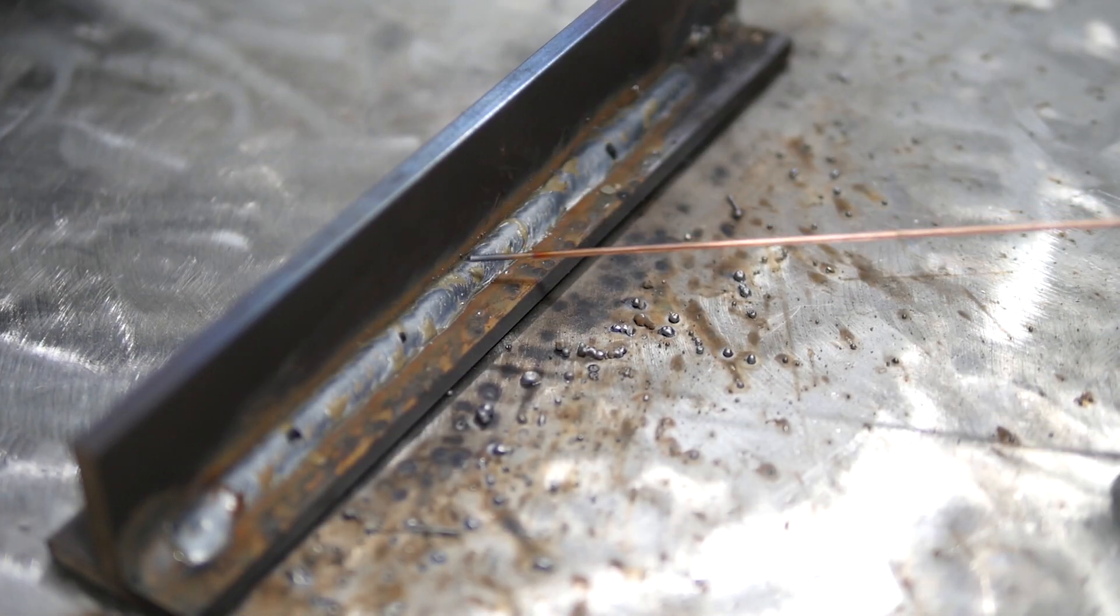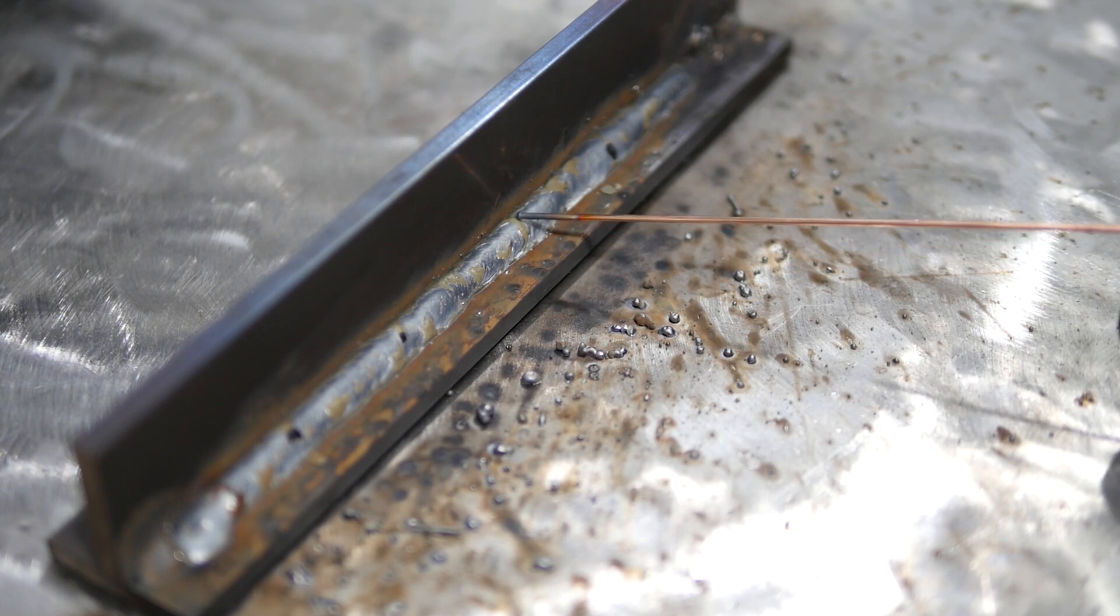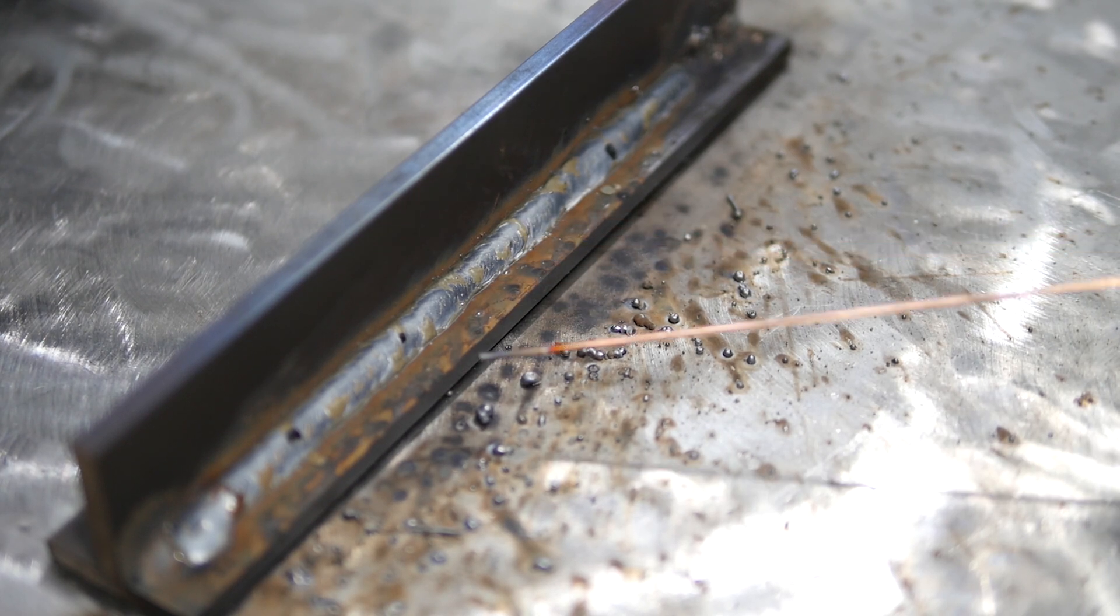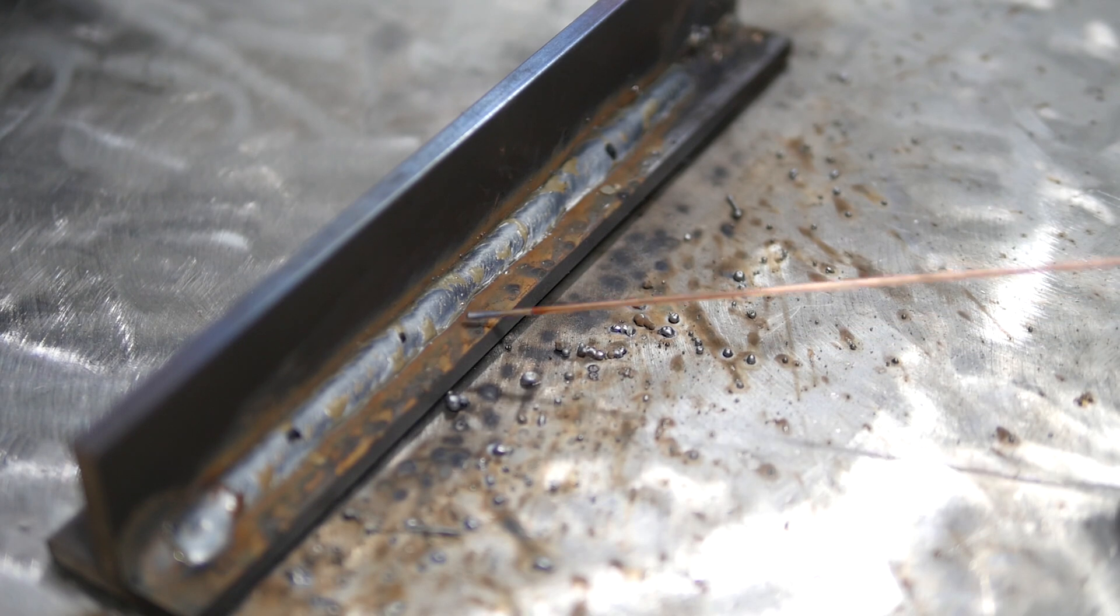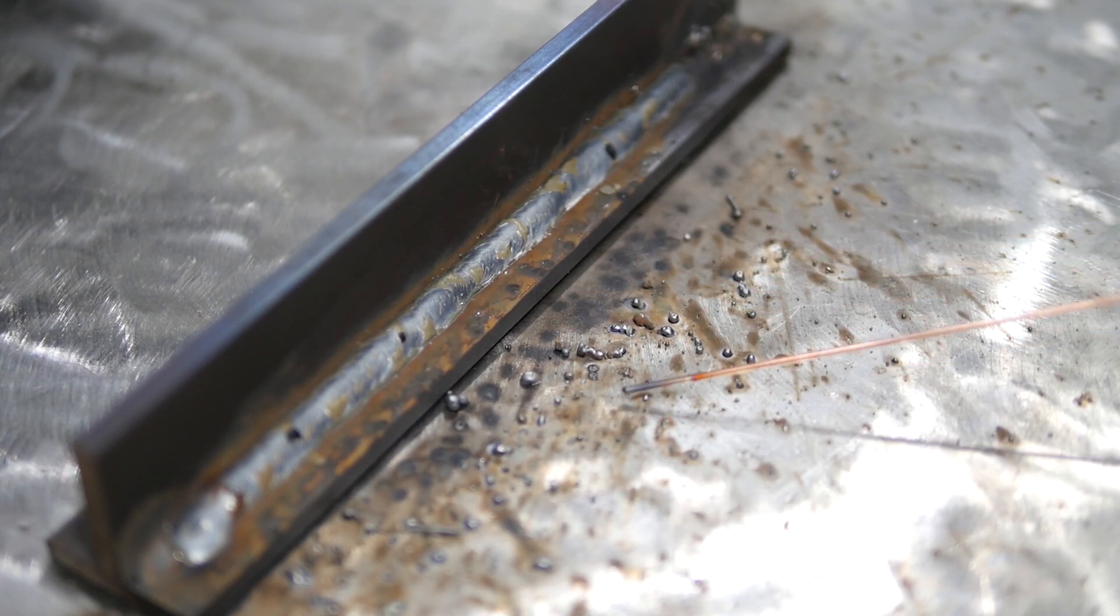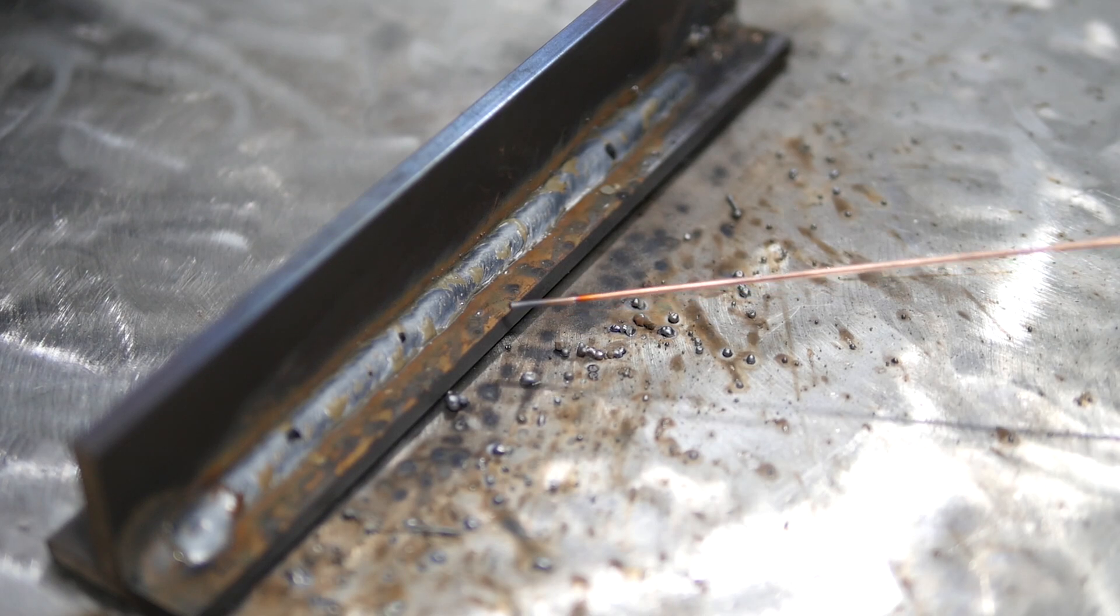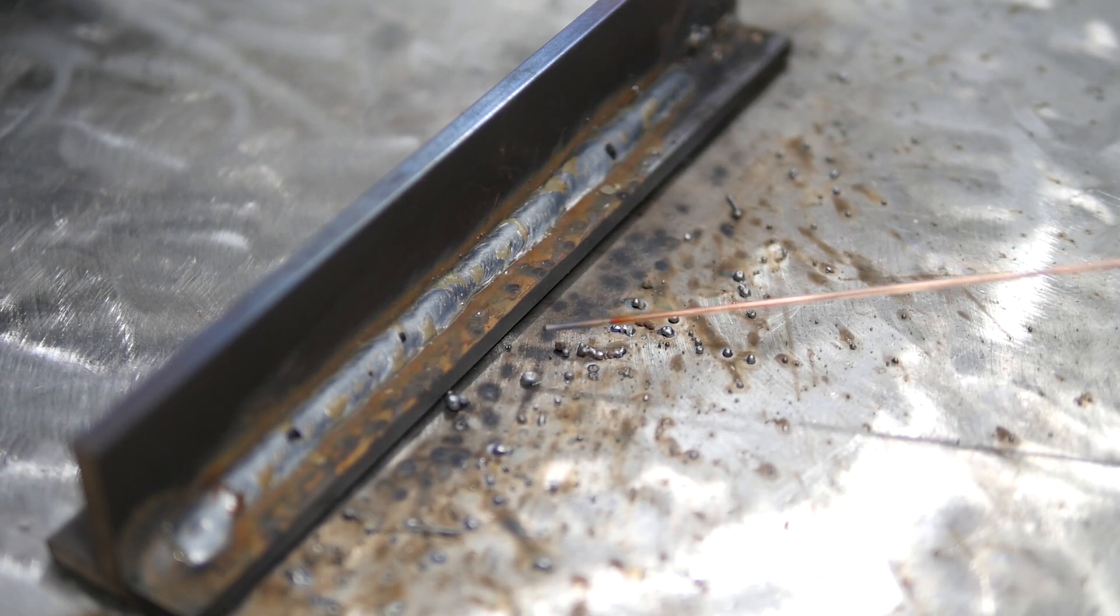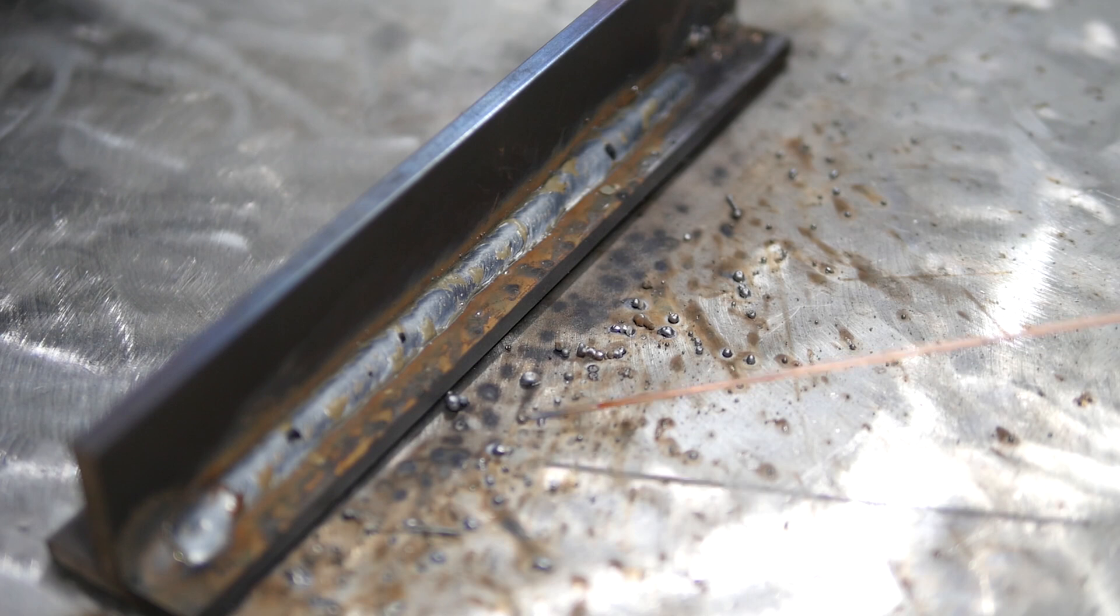Alright, there's our globular transfer weld. Now they call it globular because you're really throwing large chunks of globs across the arc and really slapping them onto this base material. That's why you have a lot of this spatter and that's definitely the biggest limitation of this mode of transfer is all the post weld cleanup.